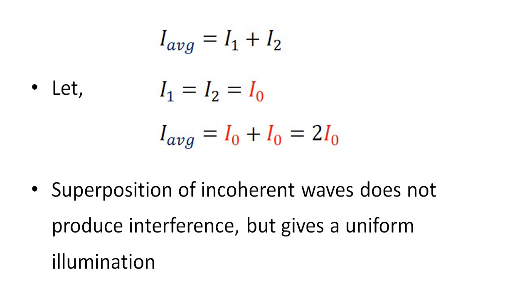The interference of incoherent waves does not produce an interference pattern, but it gives a uniform illumination. The intensity is equal to the sum of the intensities of the two waves, giving uniform illumination.